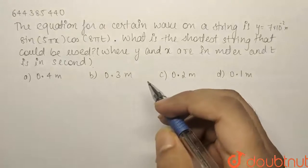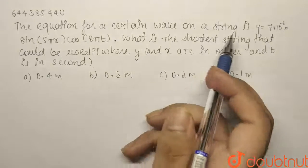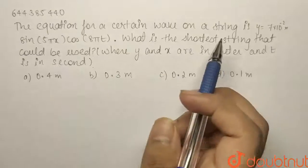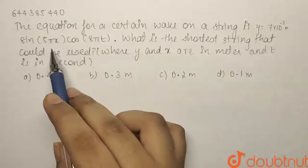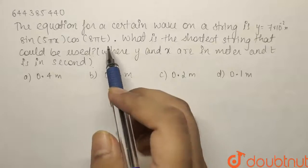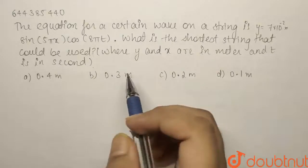Here we have a question on the topic of waves. The equation for a certain wave on a string is y = 7 × 10^(-2) sin(5πx) cos(8πt). What is the shortest string that could be used?